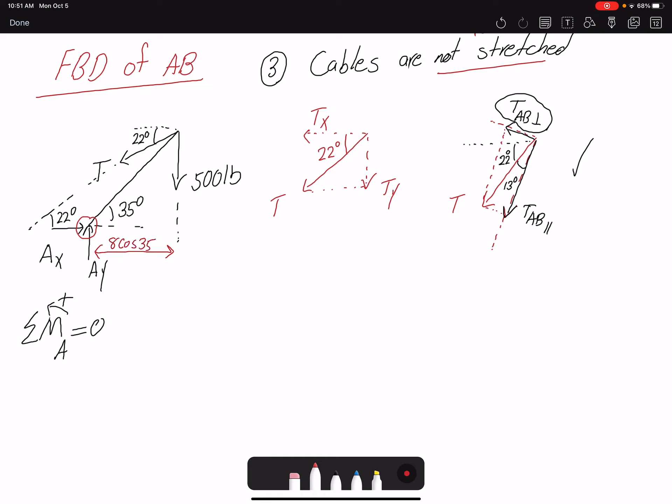The moment that it's creating is clockwise, so that would be negative. So the magnitude of the force is 500, moment arm is 8 cosine 35. That's for that force. And then for my tension I have decomposed it into two components, and this component is creating a clockwise moment. So T sine 13, and the moment arm would be 8 feet, equals zero.